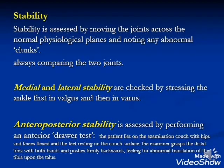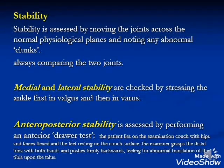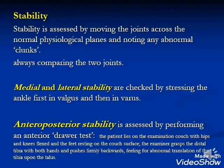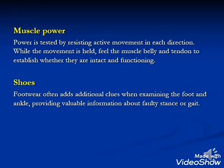Stability is assessed by moving the joint across the normal physiological plane and noting any abnormal clunk; always compare both sides. Medial and lateral stability are checked by stressing the ankle in valgus then varus. Anteroposterior stability is assessed by the anterior drawer test — the examiner grasps the distal tibia with both hands and pushes firmly backward, feeling for abnormal translation. Muscle power should be checked. Footwear should also be examined, as it provides valuable information about faulty stance.